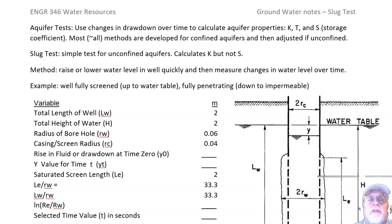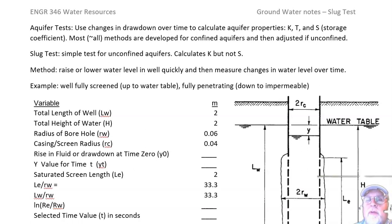From aquifer tests — where we measure the drawdown at the well and usually at several monitoring wells — we can calculate the hydraulic conductivity and transmissivity. We can also calculate something called the storage coefficient, which has to do with the transient behavior of the aquifer, or how fast it draws down. In this class we're not going to talk about that right now; I'm going to go through a simple method that does not calculate the storativity.